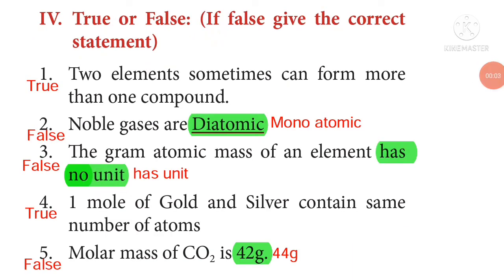True or false, if false give the correct statement. Two elements sometimes can form more than one compound. The given statement is true. Noble gases are diatomic. Here the given statement is false and the correct option is monoatomic.